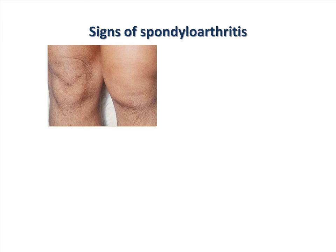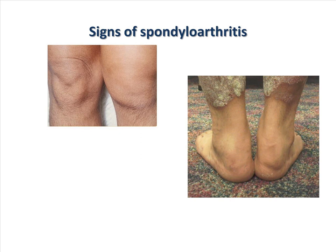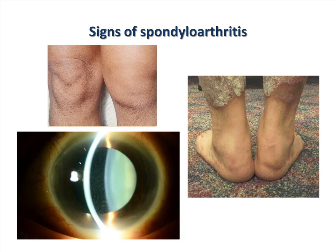Signs of spondyloarthritis include peripheral arthritis, Achilles tendonitis or enthesitis, as well as uveitis. Uveitis can be present in about a third of patients, with anterior uveitis being the most common. There is no clear relationship between articular disease and uveitis. Uveitis is typically unilateral. Patients can have red and painful eyes and experience visual disturbance. Uveitis can resolve spontaneously, and in refractory cases, treatment often results in resolution of symptoms in about four weeks.